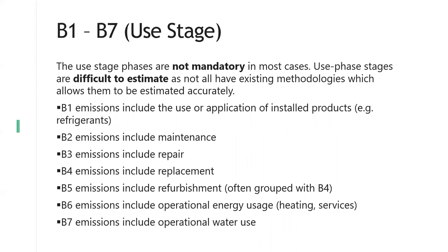The two B use phase emissions for operational carbon are B6 — energy — and B7 — water. Energy can include anything relating to the operational usage of the building: purchasing grid electricity, fuels, things used for heating or other services, and also renewables in the building. Maybe we have PV panels on the roof which generate electricity we don't have to purchase from the grid — that will be allocated to D phase, which I'll come back to shortly. B7 includes operational water use — any amount of water used to keep the building running. In Norway there is also B8, which is operational transport, and that can be a massive part of emissions if you have a lot of people working in an office.